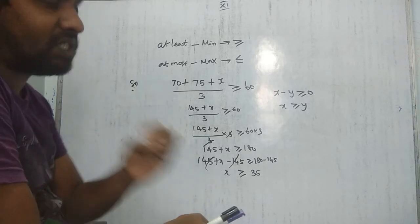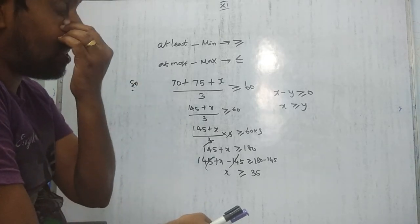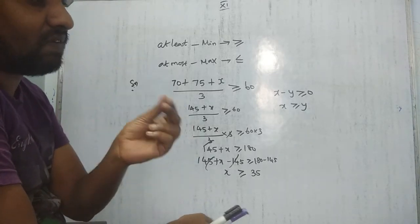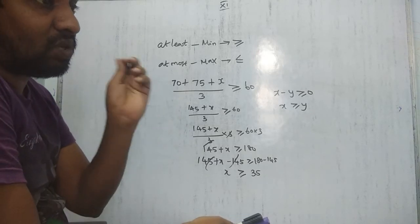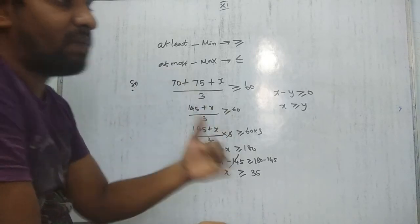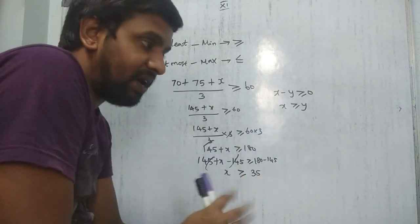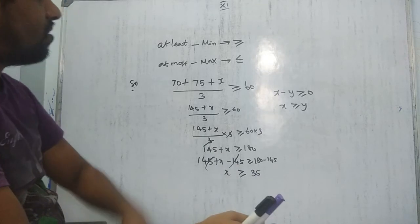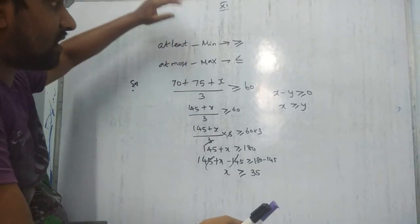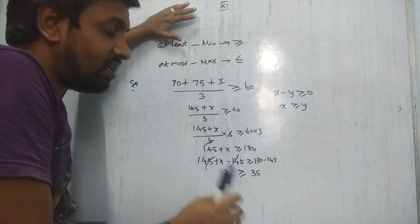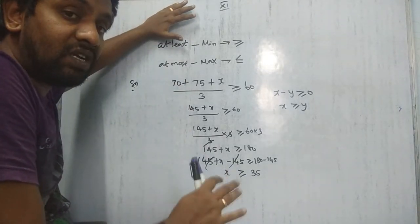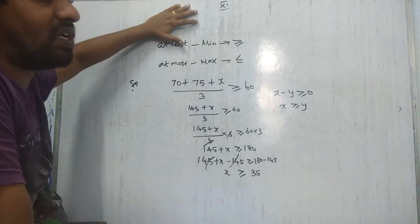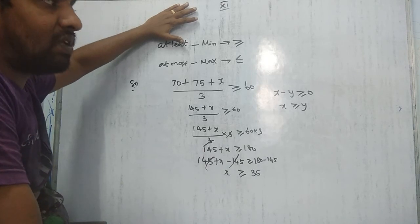Linear inequalities is a very easy chapter. At class 11 level, they may ask for 6 marks. In class 12, it becomes linear programming problems worth 5 marks. So the concepts you learn in class 11 are very important for class 12.